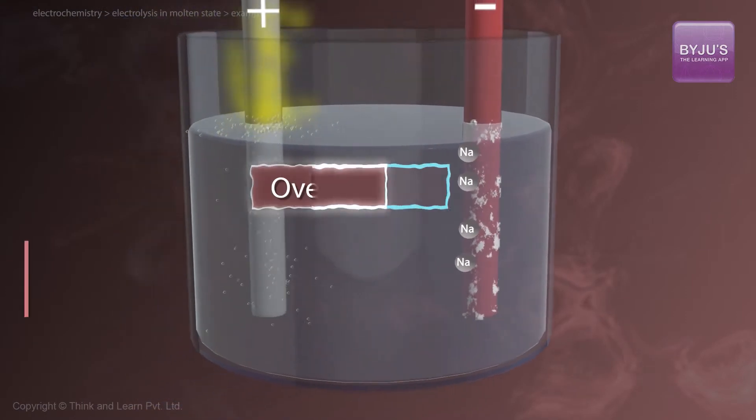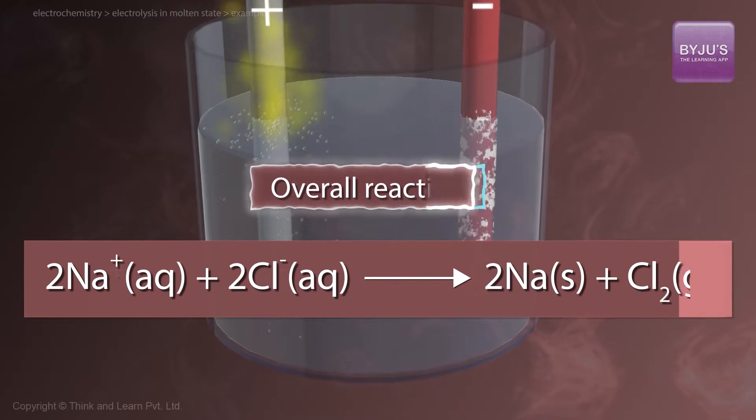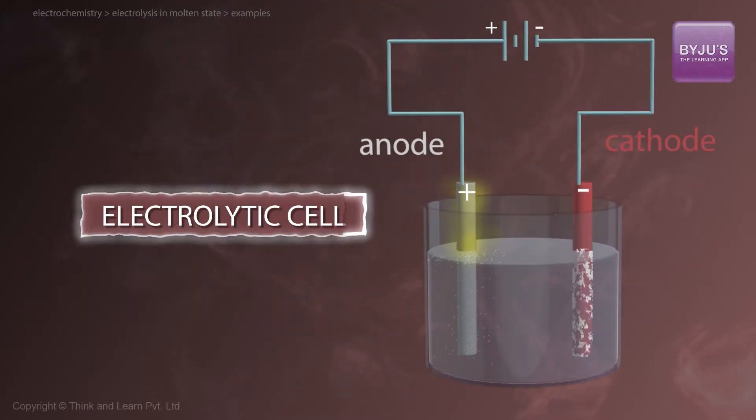The overall reaction is 2Na+ plus 2Cl- gives 2Na solid plus Cl2 gaseous. This type of cell is called an electrolytic cell.